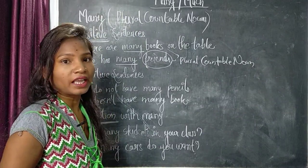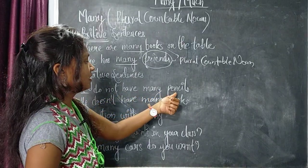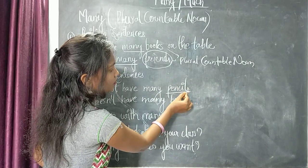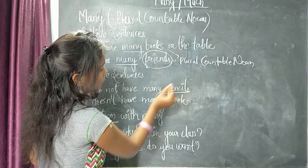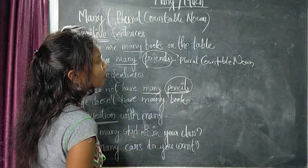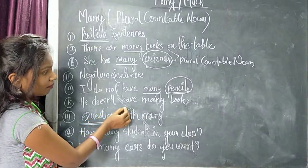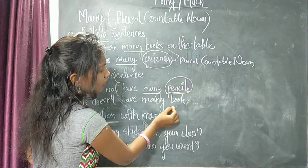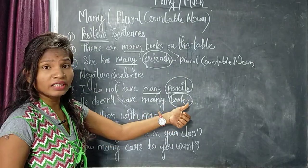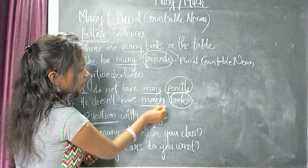Now let's see negative sentences. 'I do not have many pencils.' Pencils has S, which means plural countable noun. That's why we use many here. Second example: 'He doesn't have many books.' Again, books is a plural countable noun — S is written there, so we use many.